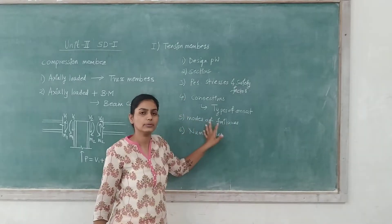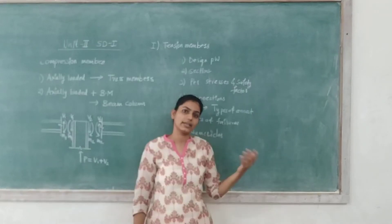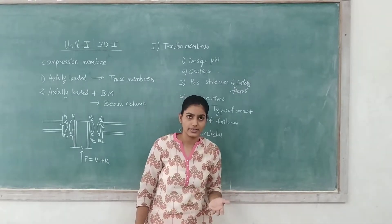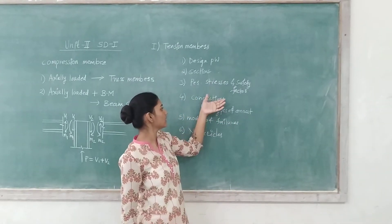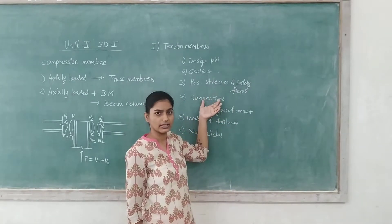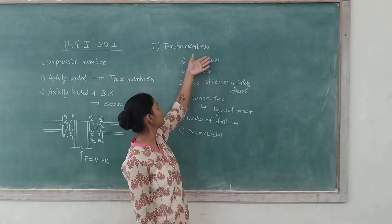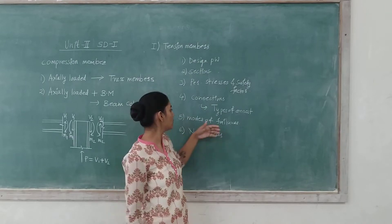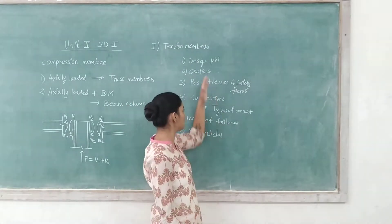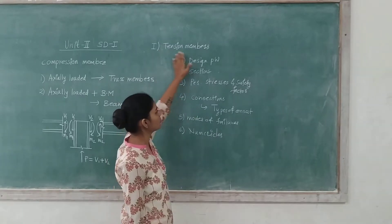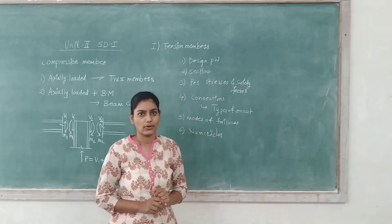Under the numericals, we have gone through a bunch of numericals consisting of connections and how the connection plays, how to design a connection, how to find the ultimate strength of any connection. In the design part, we have managed to know how to find the tension member and how to overcome the modes of failure. I hope you remember all this. This is your first unit which I completely finished through the screen recording.